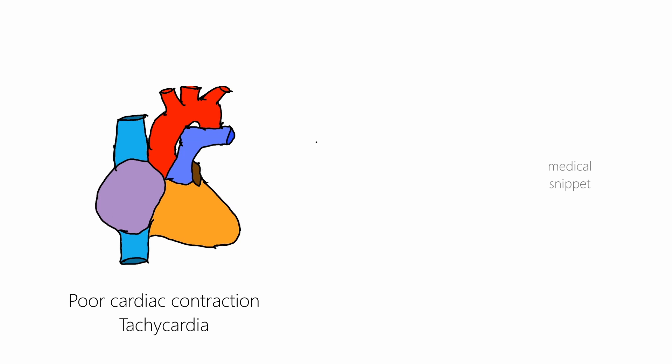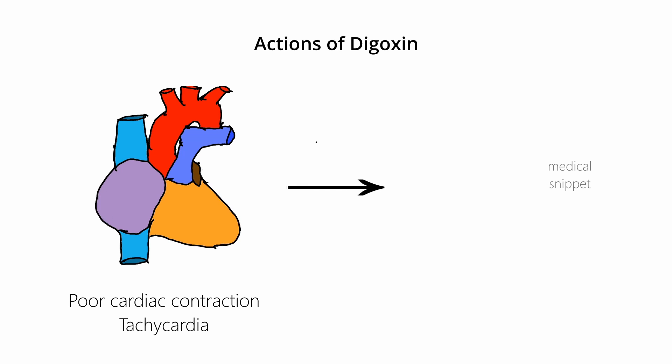First let's see what are the actions of digoxin. Then we will discuss the mechanism of action. The two main actions of digoxin are positive ionotropic effect, that is it increases the force of contraction of the heart. Second action is negative chronotropic effect, that is it decreases the heart rate. Let's see the mechanism behind these actions.